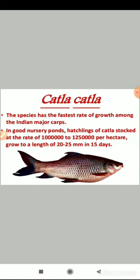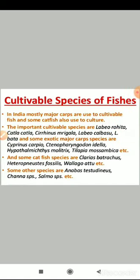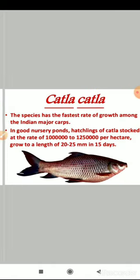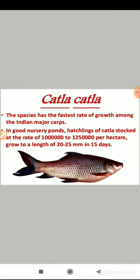First, Katla katla — this species has the fastest growth rate among the Indian major carps. In good nursery ponds, hatchlings of Katla katla stocked at the rate of 1,25,000 per hectare grow to a length of 20 to 25 millimeters in 15 days.